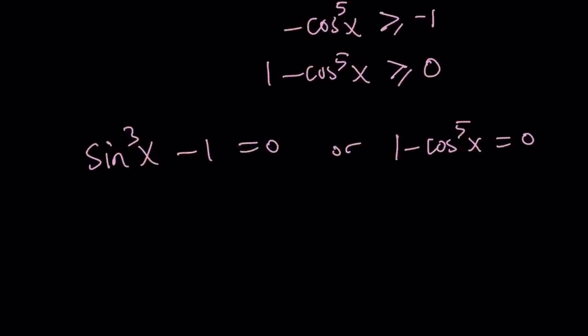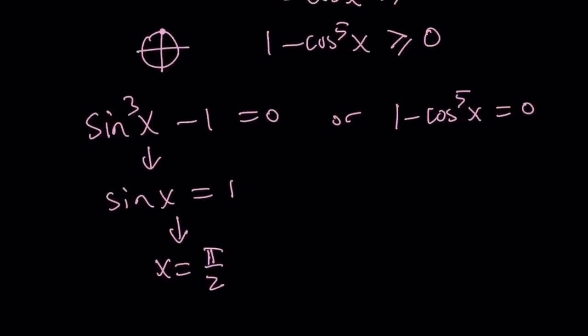And this one gives us sine x equals one. Because if you cube root, it won't matter. And from here, we can find x value. Where does sine equal one? Remember, the unit circle at pi over two. So x is going to be pi over two. And of course, you're more than welcome to add multiples of two pi. But I'm just interested in values that are less than or equal to two pi.